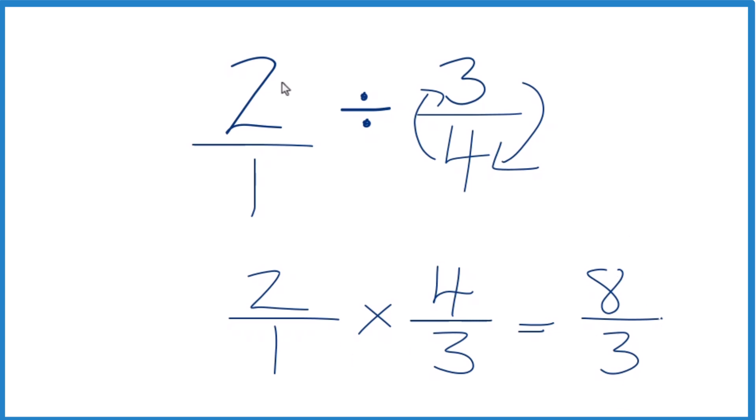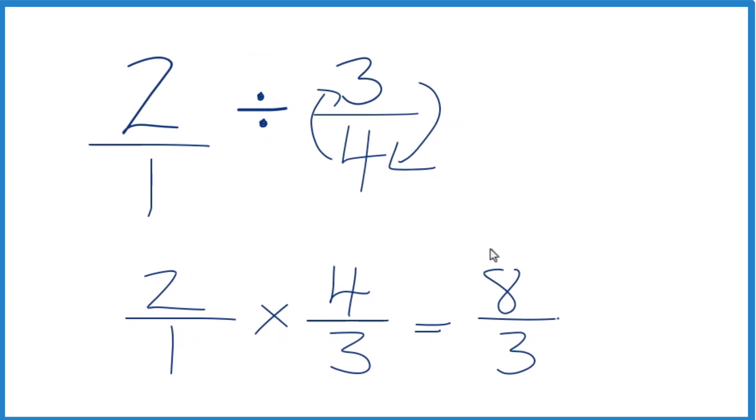So we've divided 2 by 3 fourths. We get 8 thirds. And 8 thirds, that's an improper fraction. So we could change that to a mixed number. 3 goes into 8, 2 times with 2 left over. Bring the 3 across. You could also call this 2 and 2 thirds.